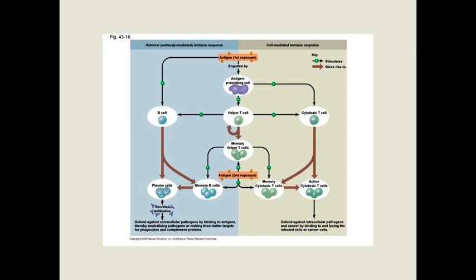The first stimulation forms memory helper cells, memory B cells, and memory cytotoxic cells. On second exposure to the same antigen, these memory cells are stimulated directly and the immune response starts immediately — within 24 to 48 hours instead of 7 to 15 days. Memory cells produce IgG directly from the beginning rather than starting with IgM. Antibodies fight extracellular pathogens by traveling through lymphatic vessels and veins to infected sites, drawn there by inflammation and vasodilation.